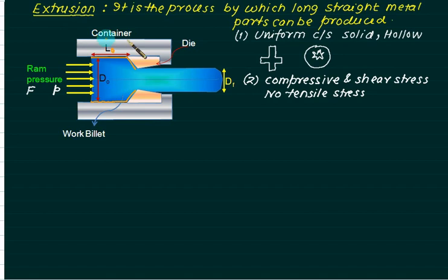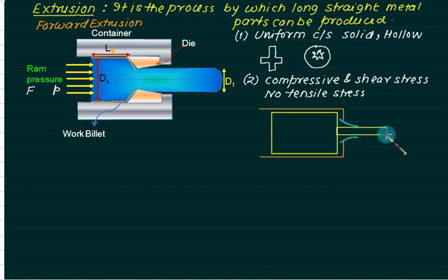The major problem in this extrusion is the friction occurring over the surface. This type of extrusion is called forward extrusion.